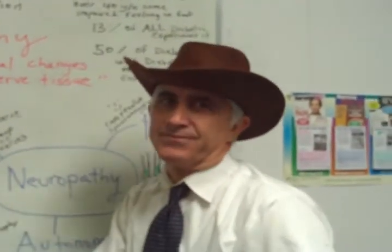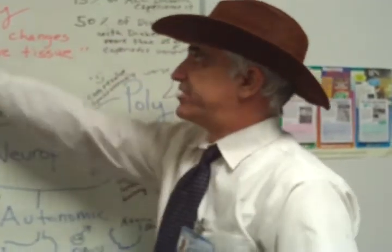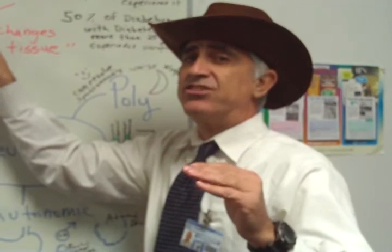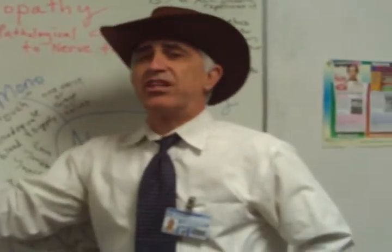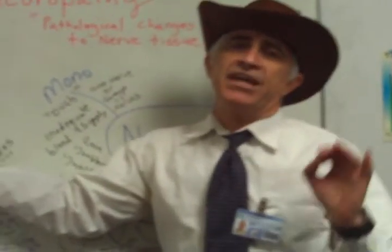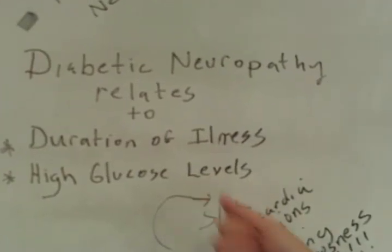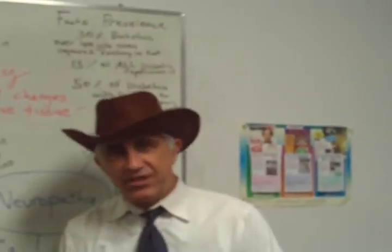These are pretty serious complications — neuropathy can have very serious consequences. So the best thing is avoidance. We should try to manage our blood glucose levels and keep them as normal as possible. There you have it for our complication on neuropathy, and thank you for listening.